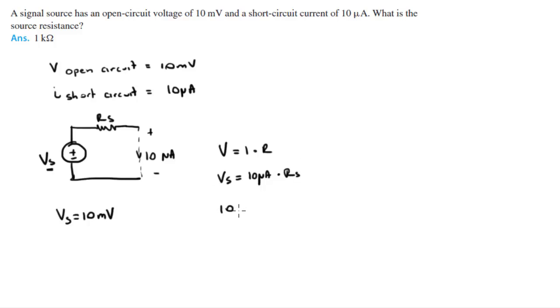And VS we know to be 10 millivolts times RS. So when you divide 10 milli divided by 10 pico, you get that R is equal to 1000 ohms, or most commonly referred to as 1k ohms. Final answer.